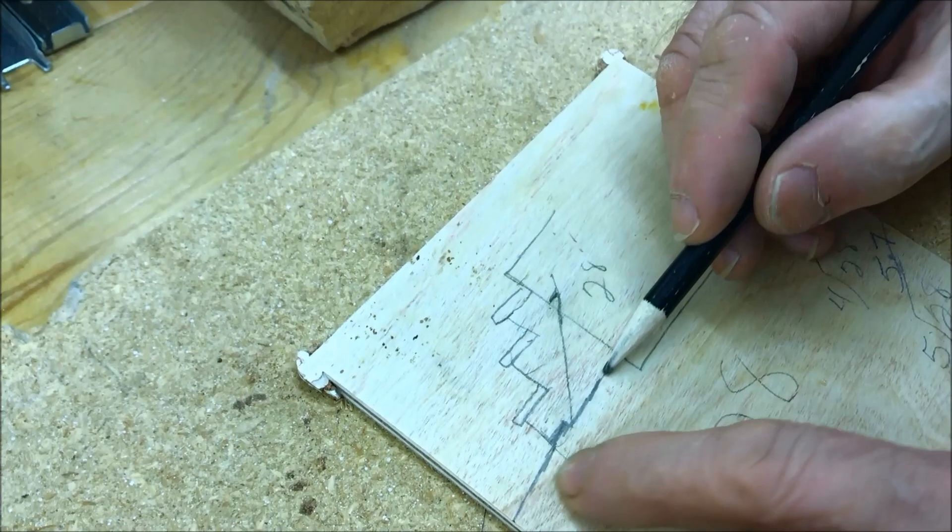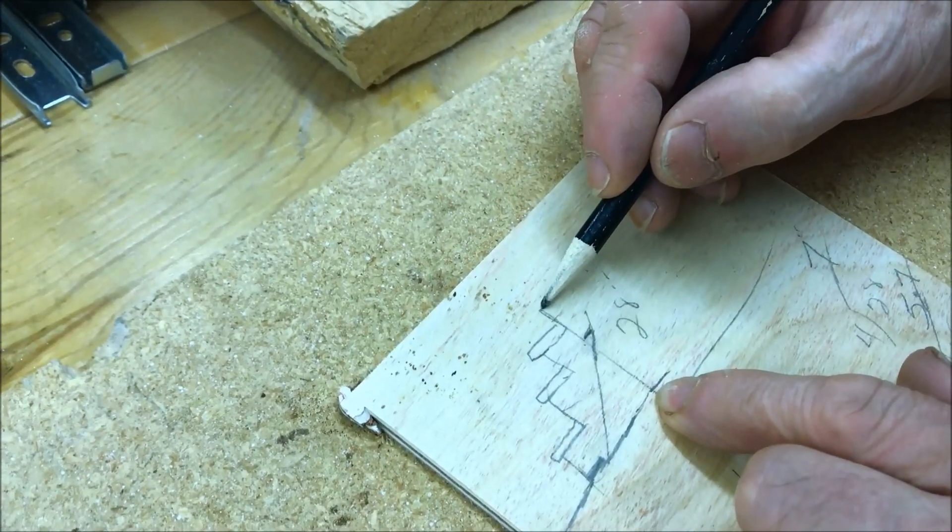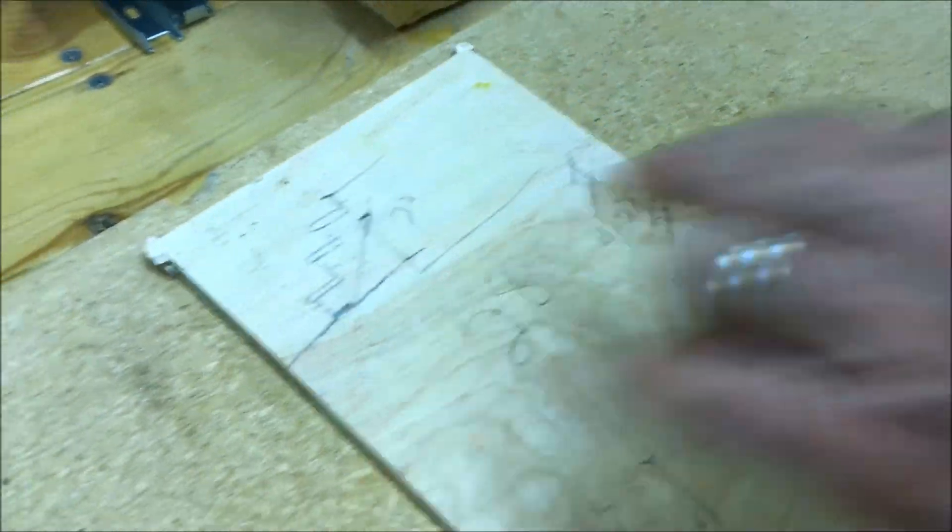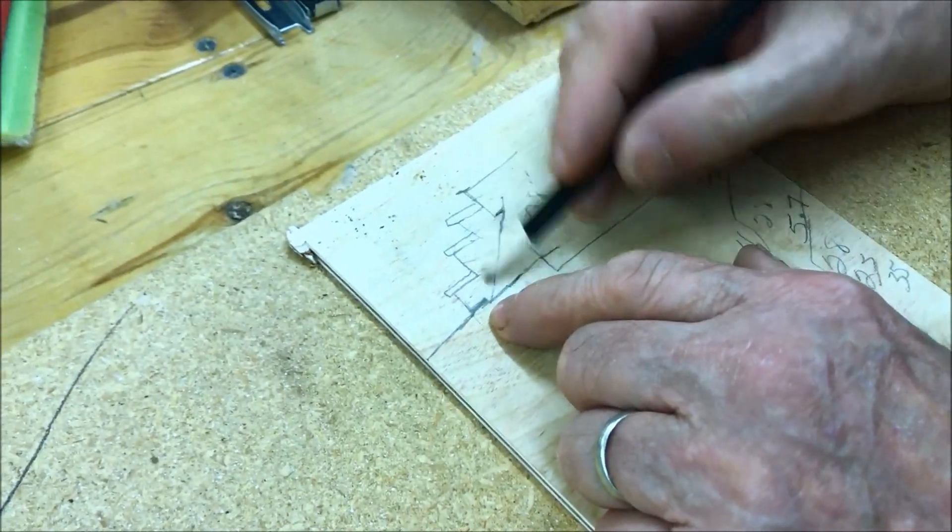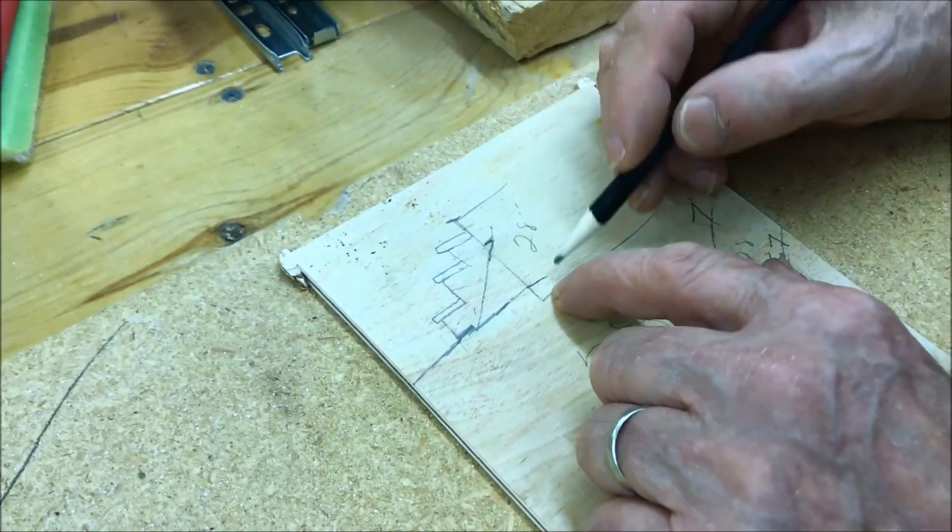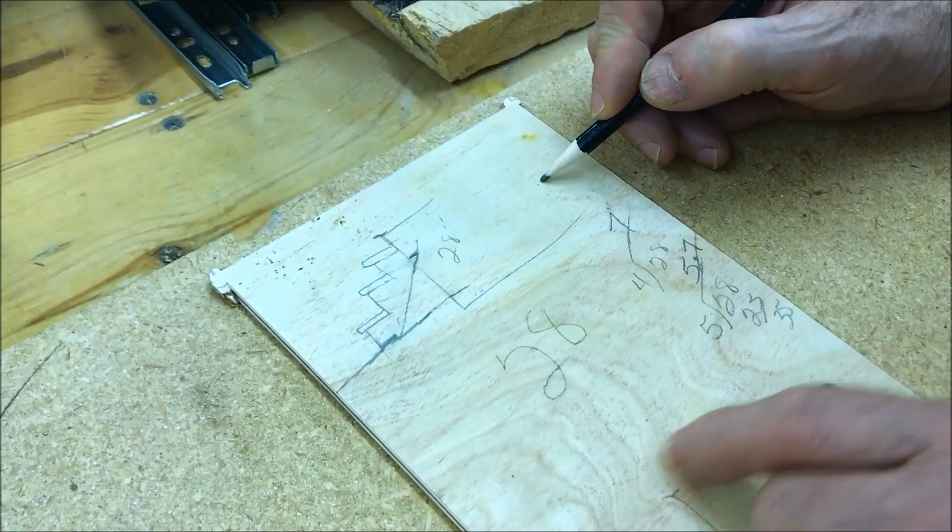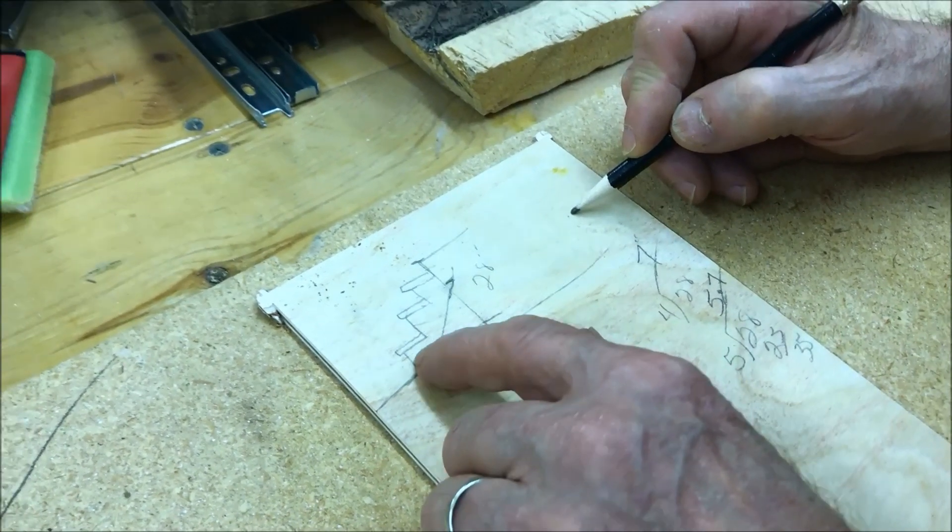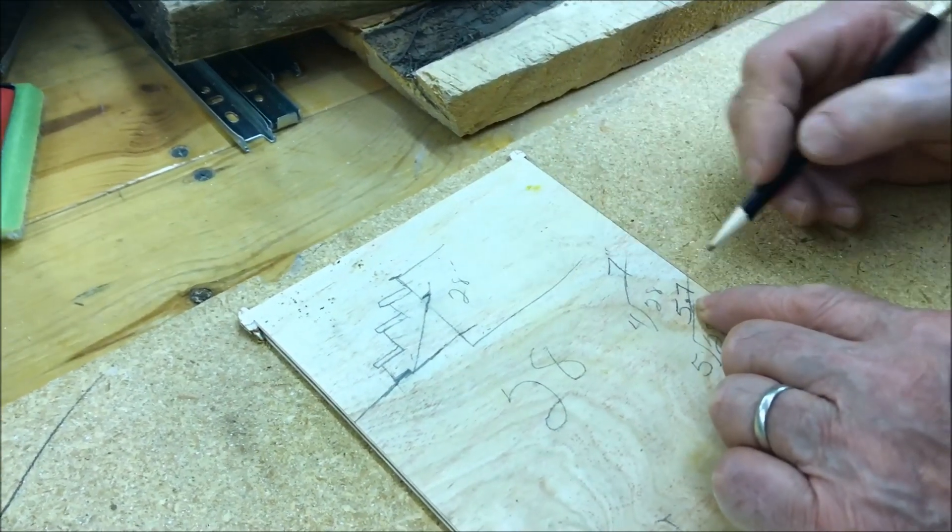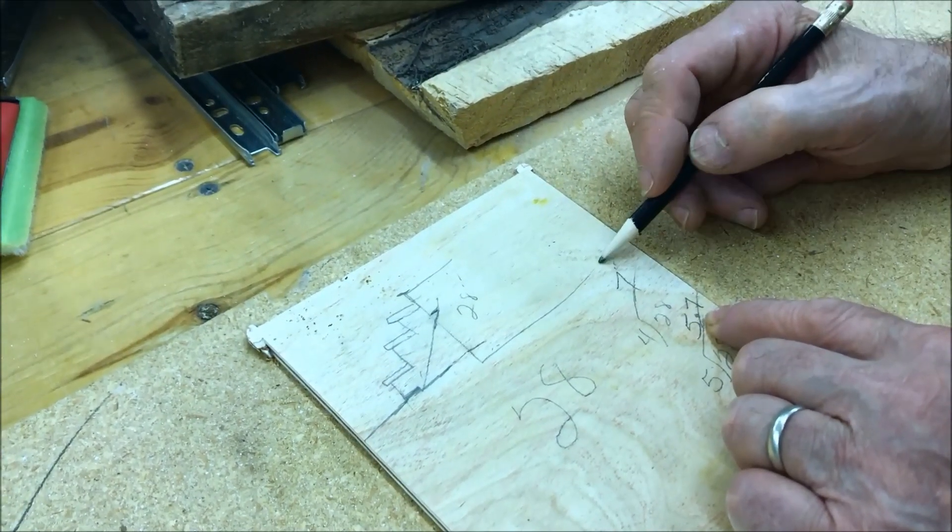From the ground to the top of the deck to figure out your rise and your run, whatever the height is, that figure, you divide it out so you get equal steps, somewhere between five to seven and a half inches.